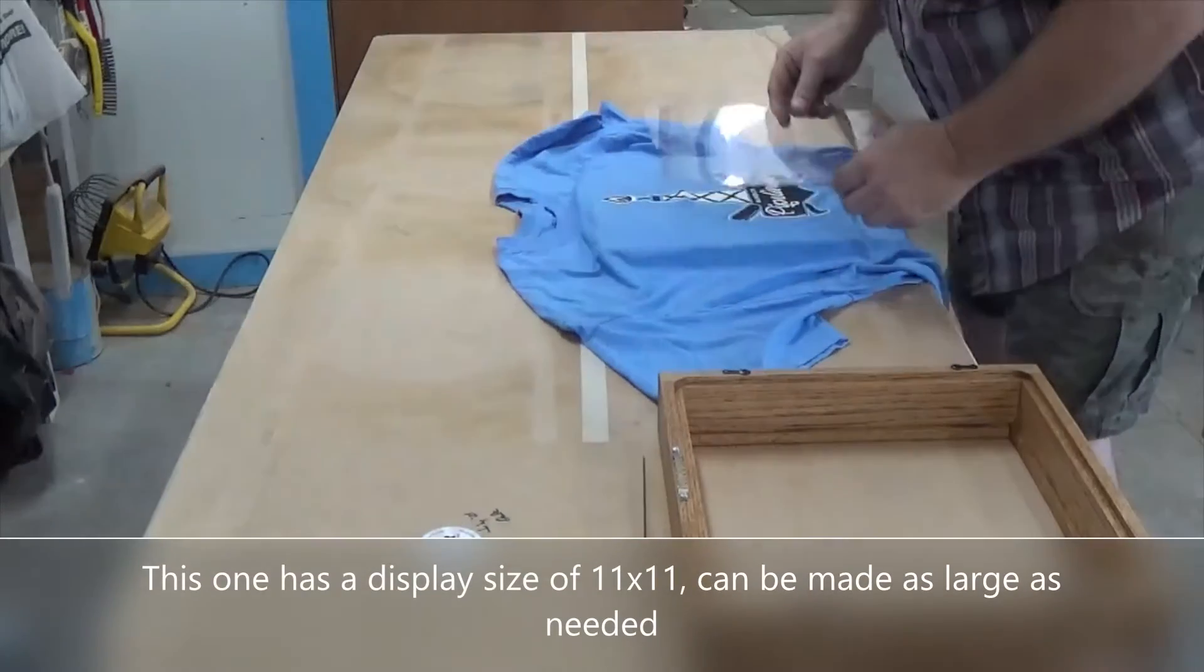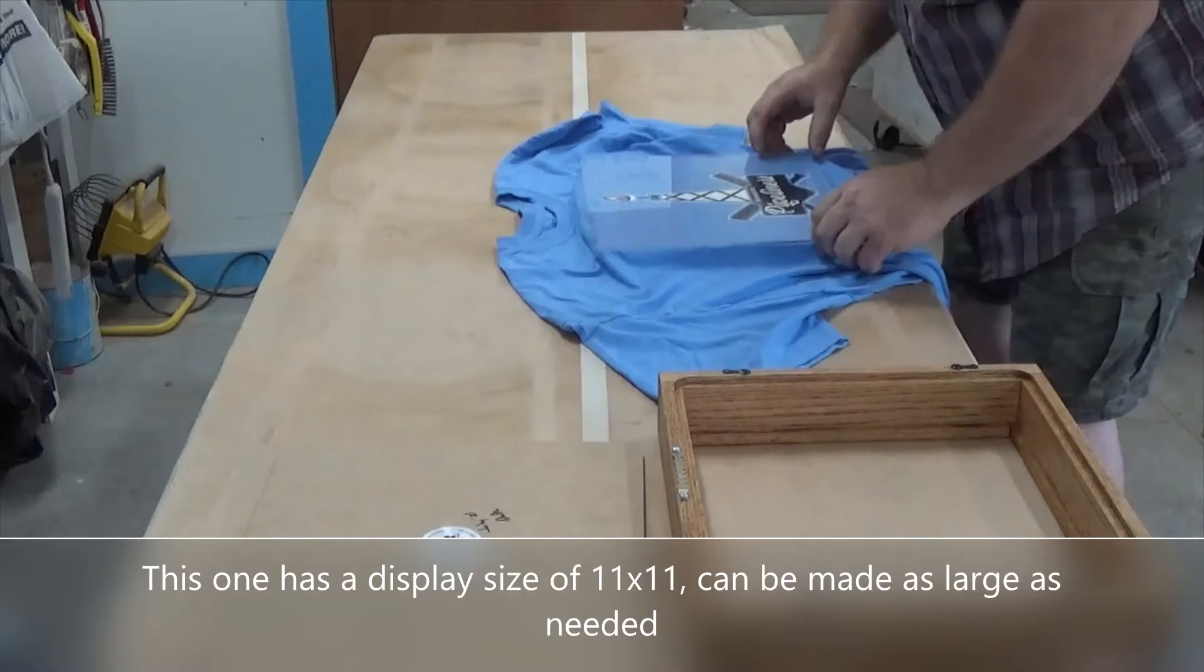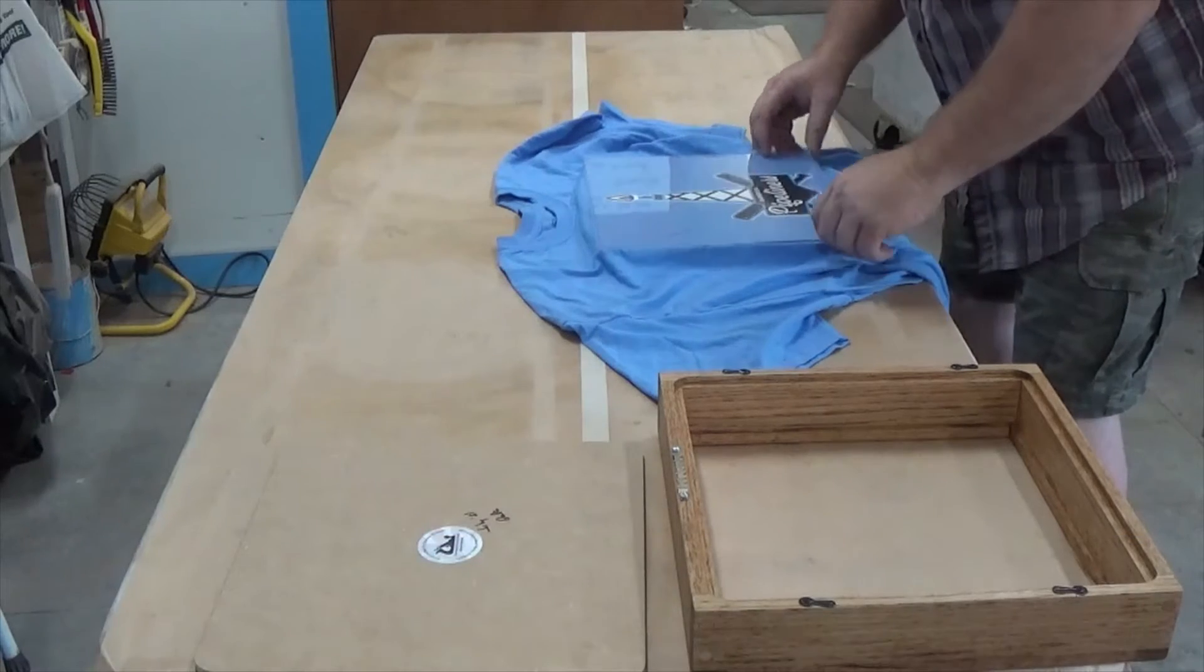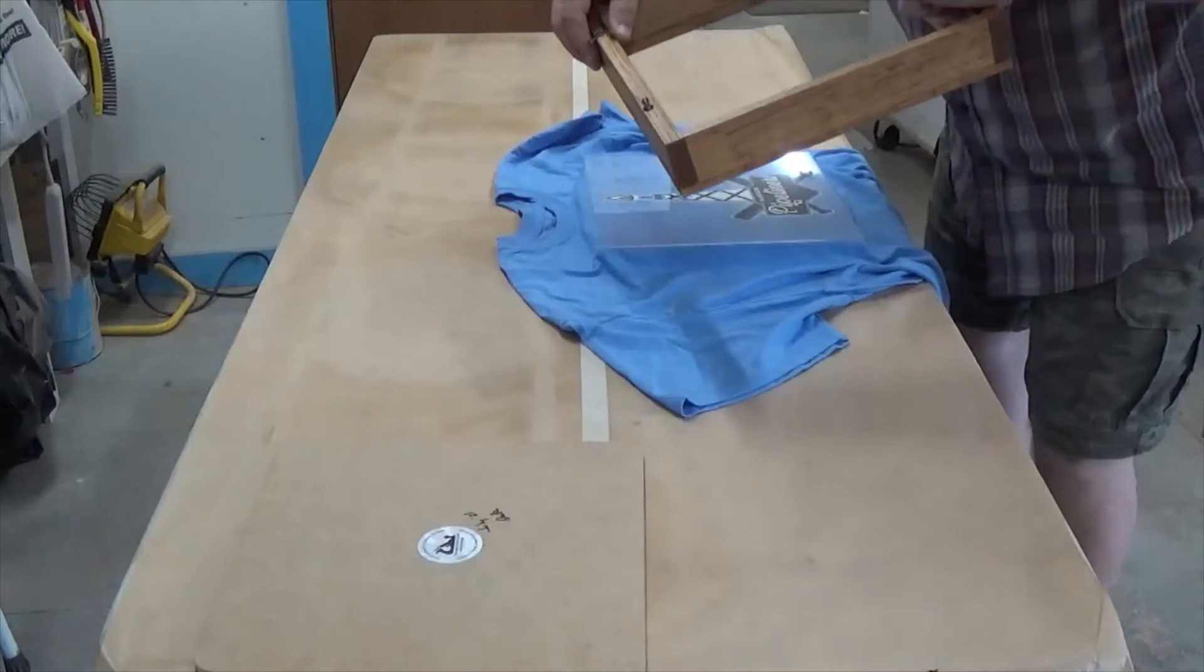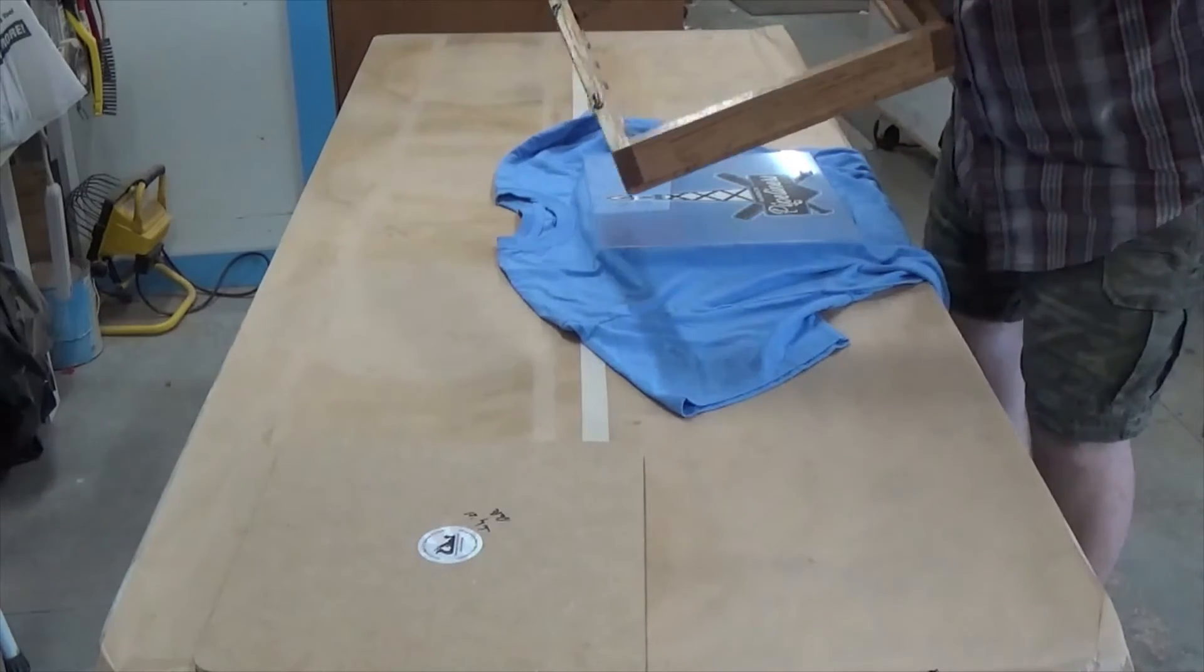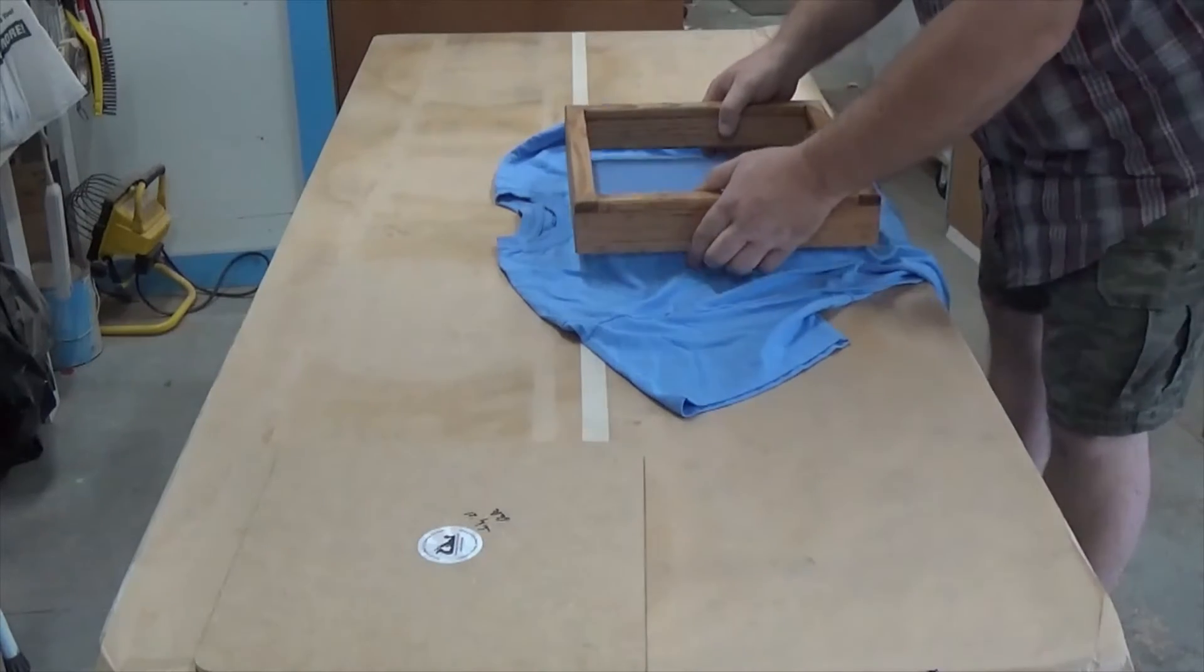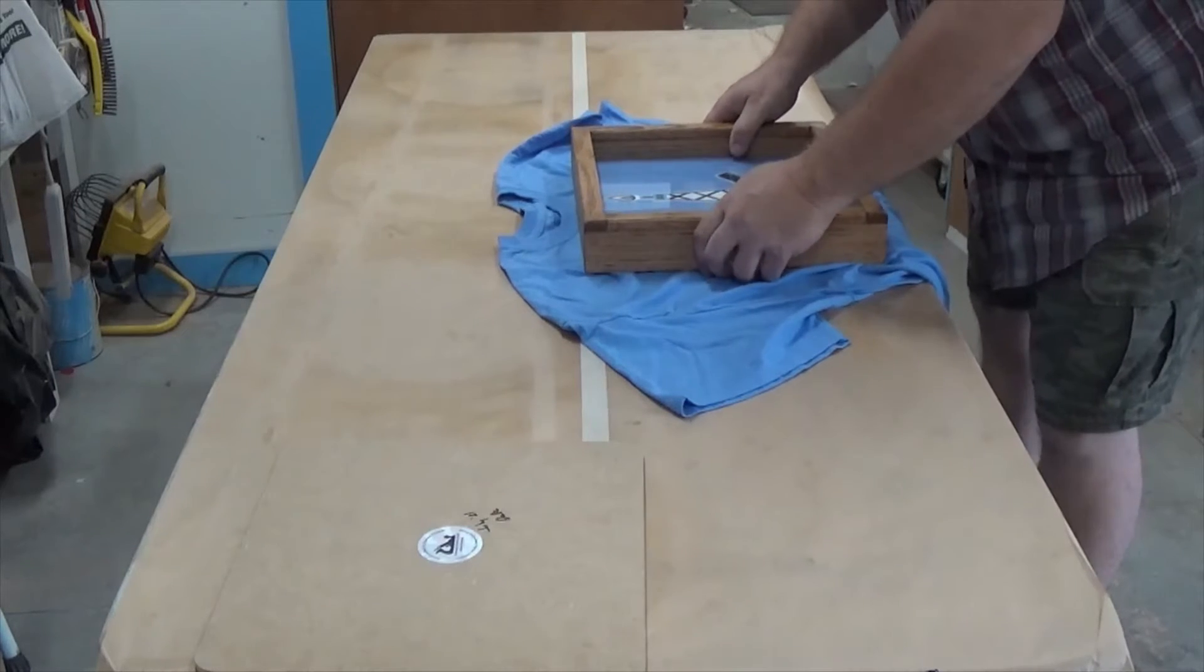Take your piece of glass. Put the piece of glass on top of the design. You're going to take your frame upside down. Make sure your little things are out of the way. Set it down over the top of there.